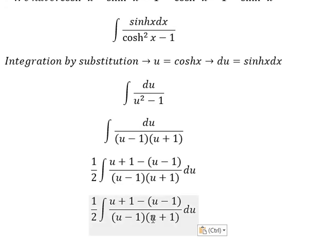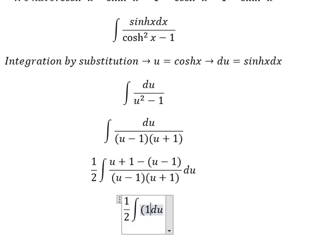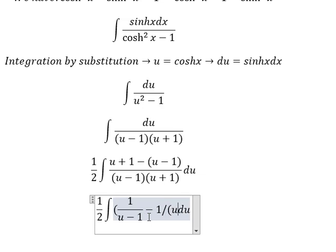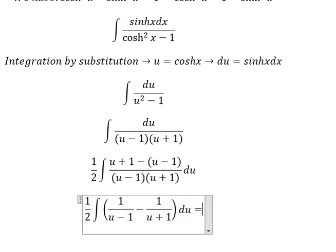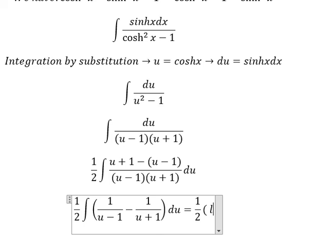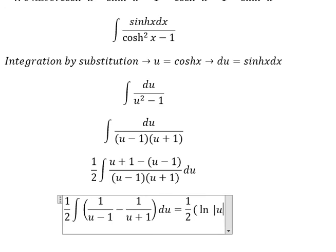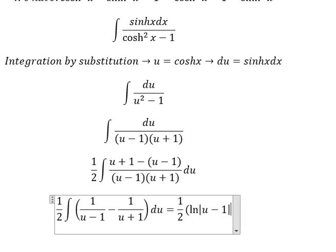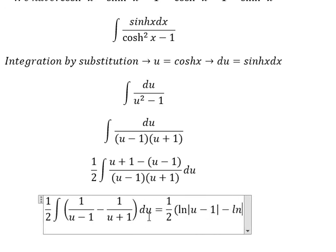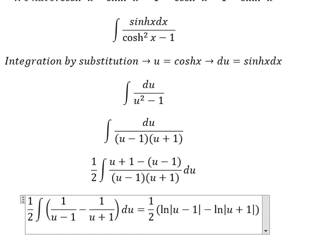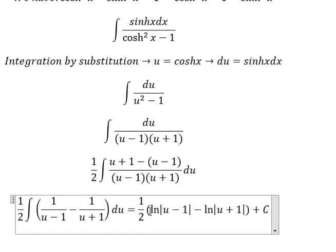(u + 1) divide (u + 1), (u - 1) divide (u - 1), so we got 1 over (u + 1). And now we got 1 over 2 ln of the absolute value of u - 1, ln of the absolute value of u + 1, and we put c in here.